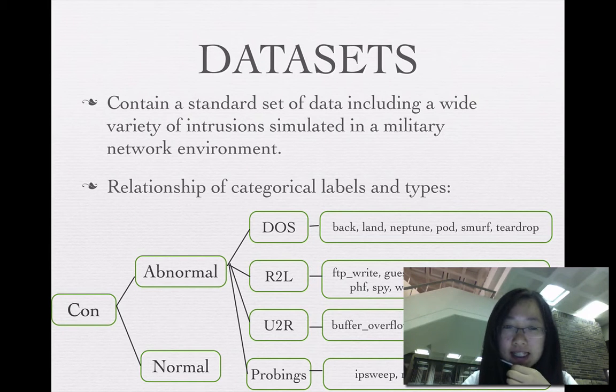The dataset contains a standard set of data including a wide variety of intrusions simulated in a military network environment. The connection can be divided into abnormal connection and normal connection. Abnormal connection includes the DOS connection, R2L connection, U2R connection and probing connections. The corresponding labels is as follows.